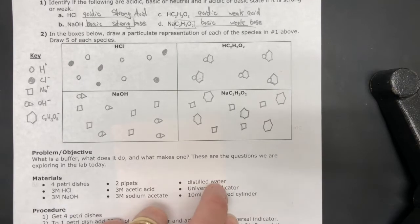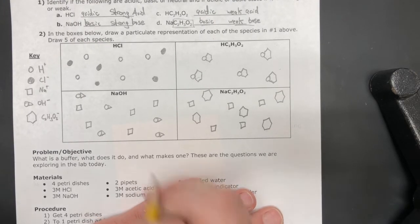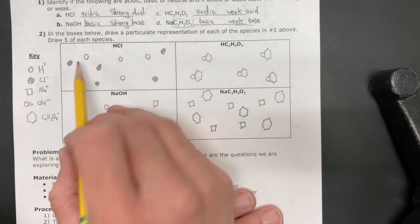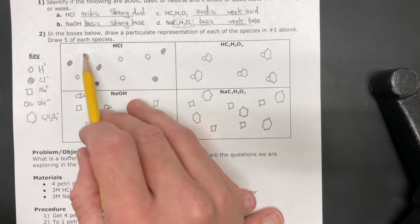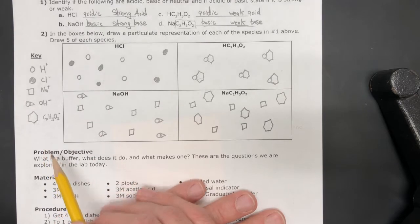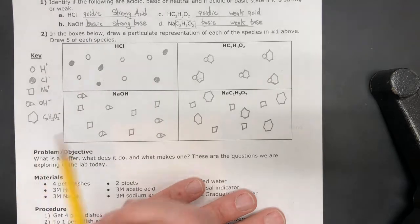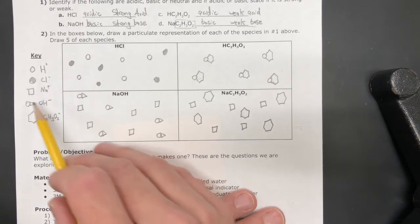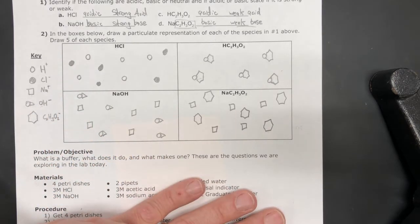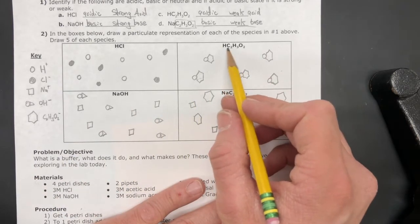Alright, let's just take a quick look at our particle diagrams, make sure that we've got the concepts down. So, HCl is a strong acid, so I should be showing hydrogen and chlorine ions dissociated, that is separated. You may have drawn the hydrogen as hydronium, and that would be totally fine. The sodium hydroxide is a strong base, so I should be showing sodium ions dissociated from the hydroxide ions.